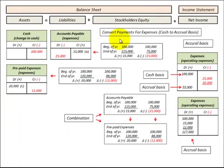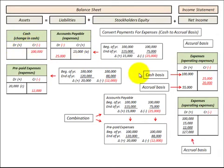Here we're going to convert our payments for expense items from the cash basis to the accrual basis. For our cash basis, this is where we incur an expense or purchase an expense item and we don't recognize it on our income statement until we actually make a payment for that expense item.